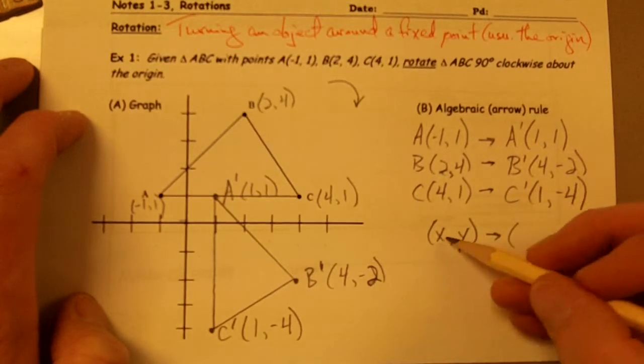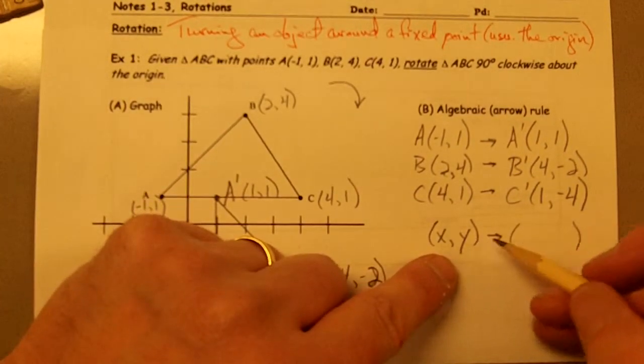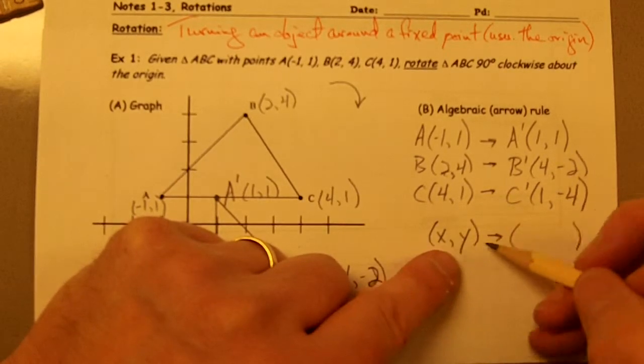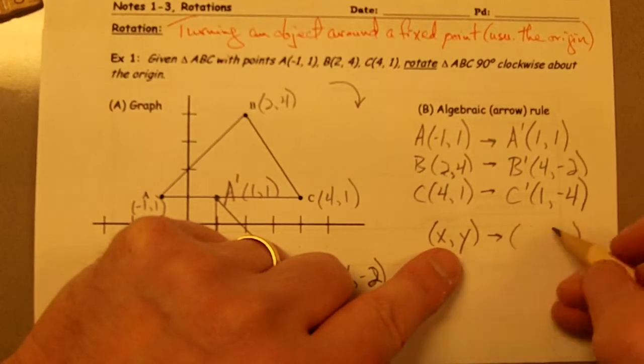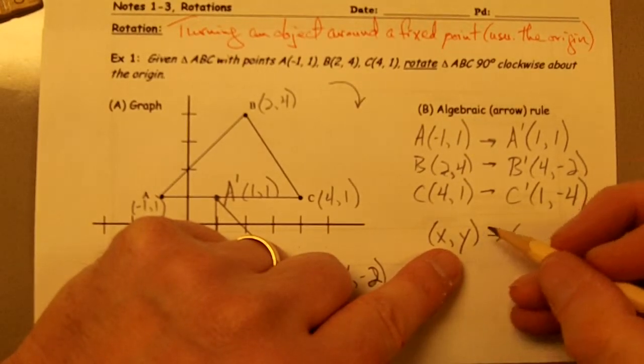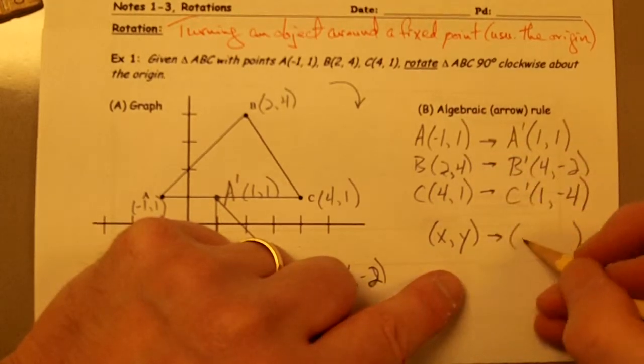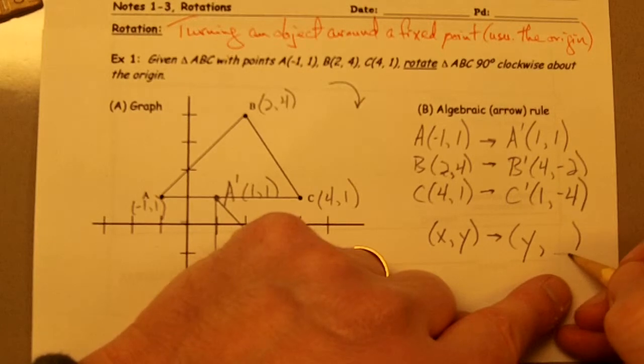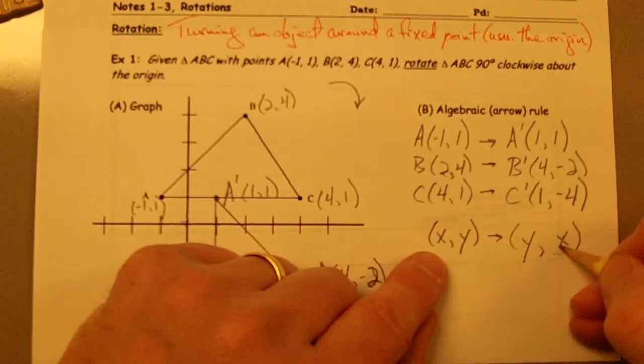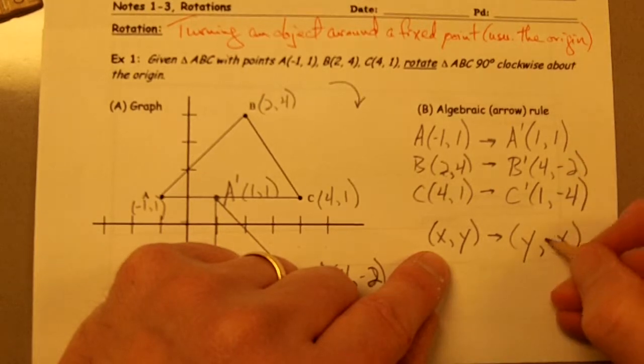So it looks like if I have two points X and Y, just two general points, if I rotate a particular point 90 degrees clockwise, my algebraic rule is going to say my new X coordinate is going to be my original Y coordinate, and my new Y coordinate is going to be my original X coordinate except I'm going to multiply it times -1.